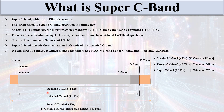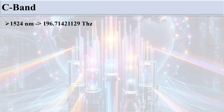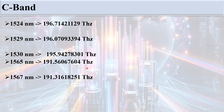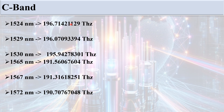You can see here the wavelength-to-frequency conversion: 1524 nanometers converts to 196.714 terahertz; 1529 nanometers converts to 196.071 terahertz; 1530 nanometers, 1565 nanometers, 1567 nanometers, and 1572 nanometers each have corresponding terahertz values, with 1572 nanometers converting to 190.707 terahertz. The Super C band range in terahertz is 190.70 to 196.71.